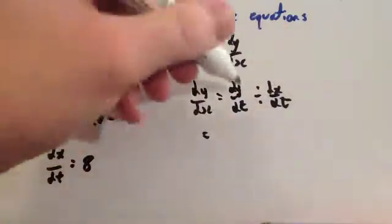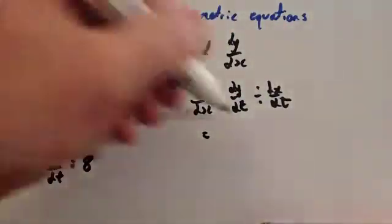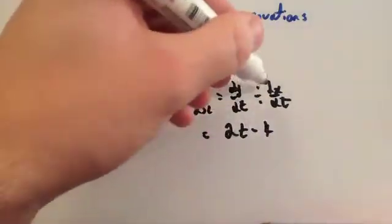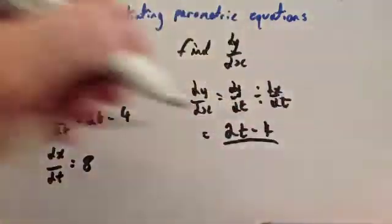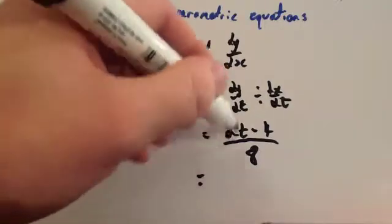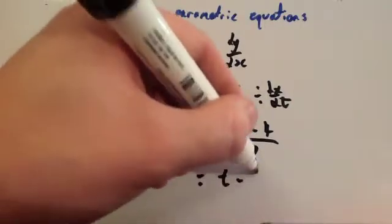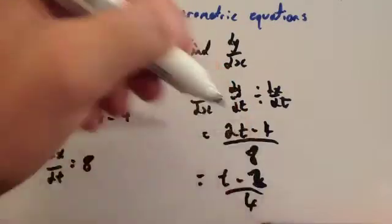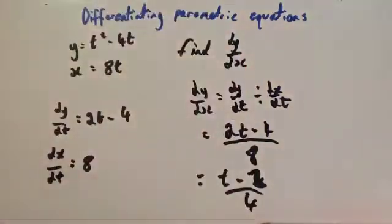So dy/dx equals dy/dt which is 2t minus 4, divided by 8. Cancelling that down, you get t minus 2 over 4 — halving all the coefficients.